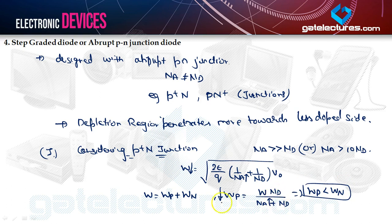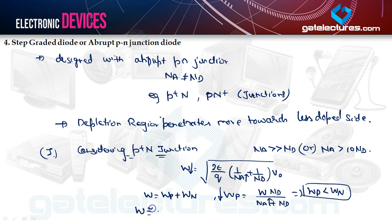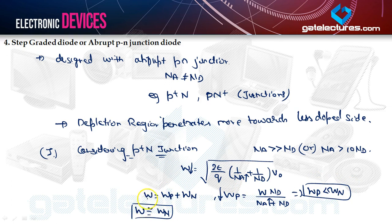Since NA is far greater than ND, WP is far smaller than WN, so we can say W is nearly equal to WN. The depletion region is dominated by the lightly doped side.